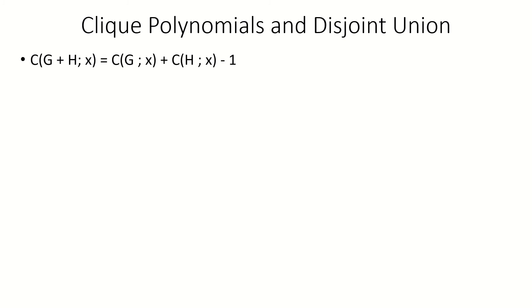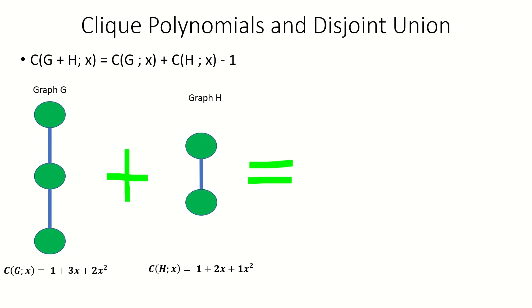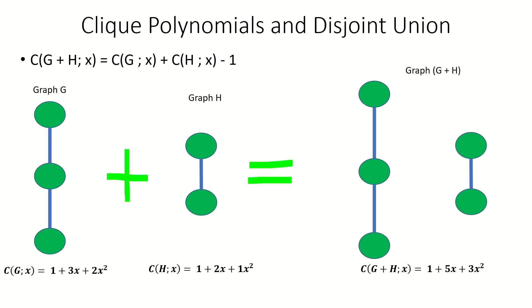The fourth property relates to graph operations. If we took the disjoint union of two graphs, g and h, the resulting graph has clique polynomial equal to the sum of the clique polynomials of g and h, minus 1. This is because every non-zero clique in g and every non-zero clique in h is in the disjoint union of g and h, but no new cliques are formed by the disjoint union. Also, the zero clique would have been counted twice if we just added the clique polynomials, so we had to subtract a constant 1.